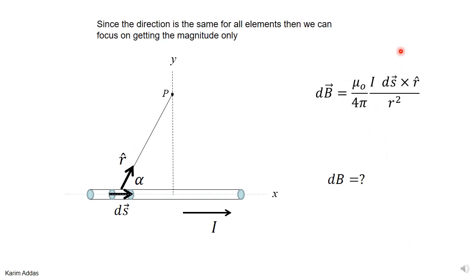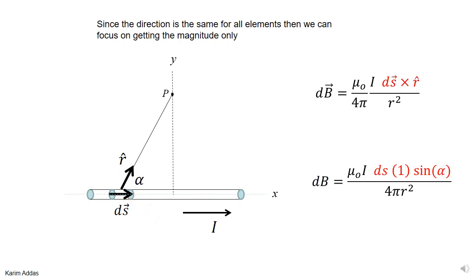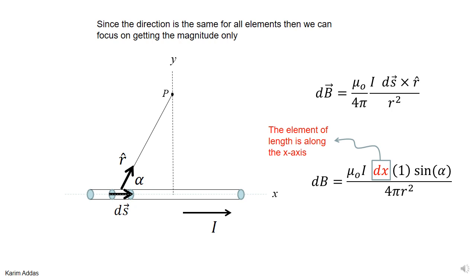The magnitude of the magnetic field due to one element of length is μ₀·i / (4π·r²) times the magnitude of ds × r̂, which is |ds| times |r̂| (which is 1) times sin of the angle between them. The angle between ds and r̂ in this picture is α, so we get that expression for the magnitude. Since the wire is along the x-axis, ds is just an element of length dx. So we can write ds = dx for this particular problem, which makes things clearer to solve.